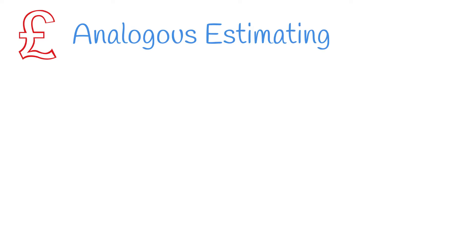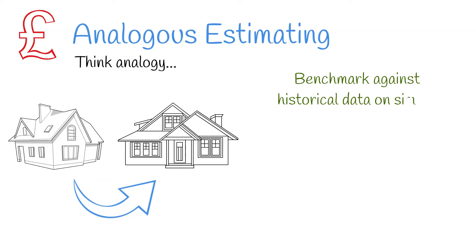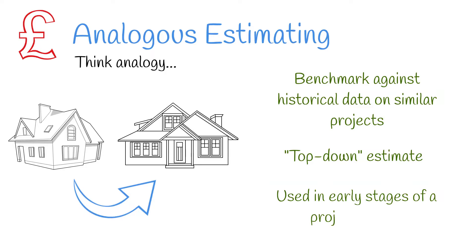So let's look at three common estimating methods used in construction. To start, we have analogous estimating. When you think analogous, think analogy — simply meaning comparing one thing to another, or in this case, one project to another. For this method, you will use historical data to find similar projects which have been carried out, and use that data as a basis to form your estimate. This is often referred to as a top-down estimate, and is used when the project is in the early stages and there are limited amounts of information available.